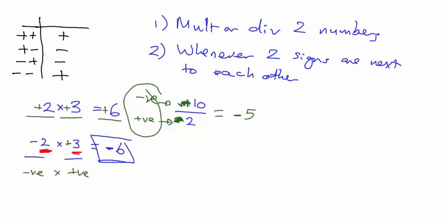Say you've got minus six over two. Minus divided by positive - the answer is going to be negative. Ignore the signs: six divided by two gives you three. So the answer is minus three.